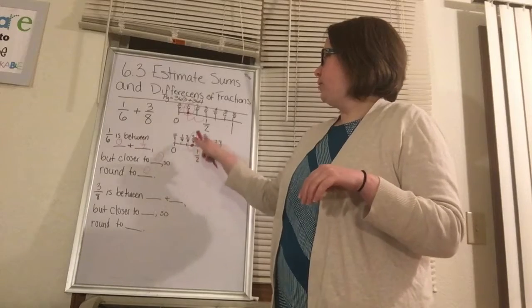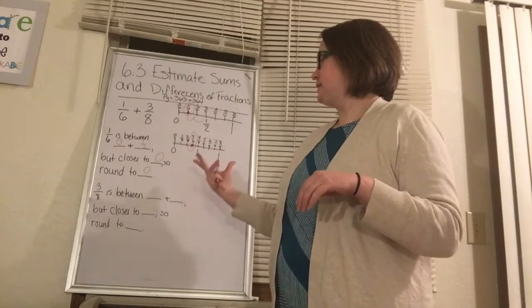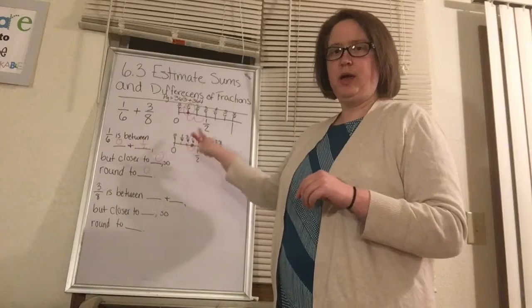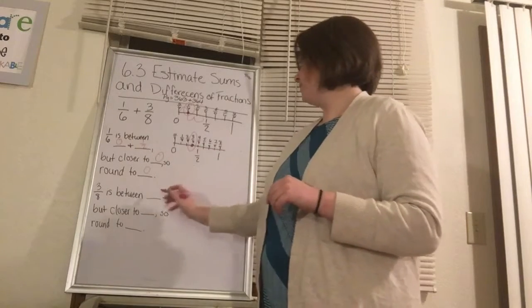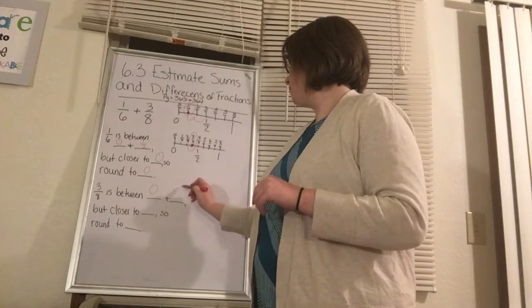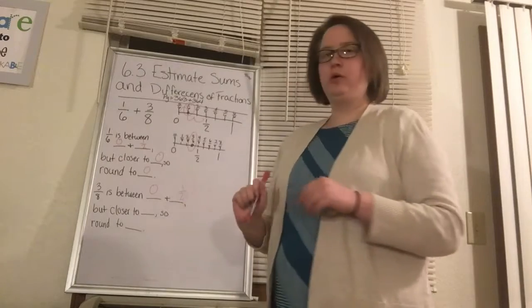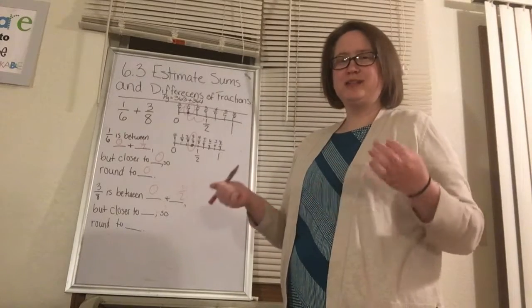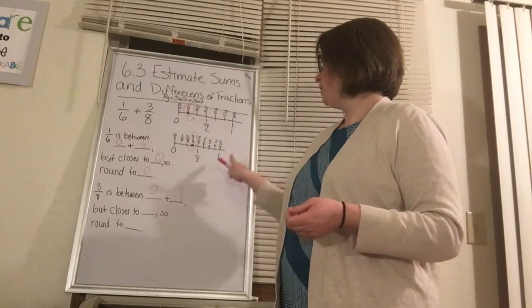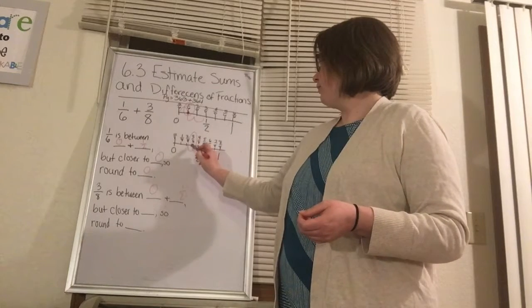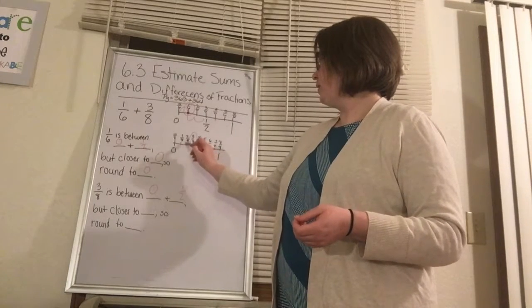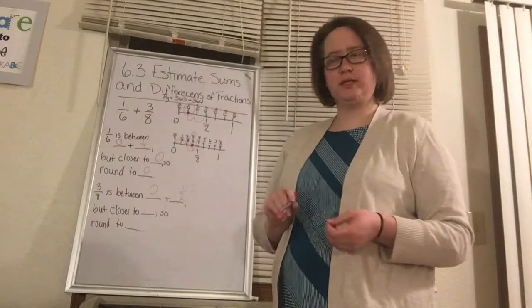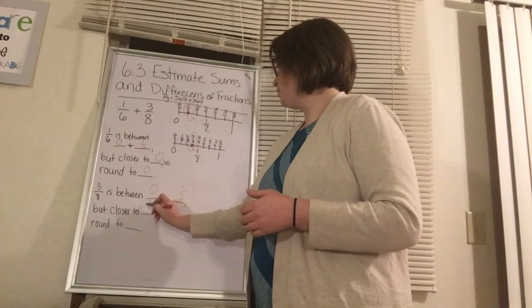And we want to look, which two benchmarks is it between? Well, it's between 0 and 1/2 again. Which benchmark then is it closest to? Well, we have 1 jump to the 1/2, 1, 2, 3 jumps to 0. So it's going to be closest to 1/2.